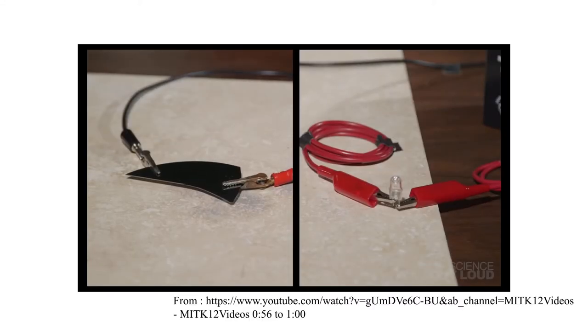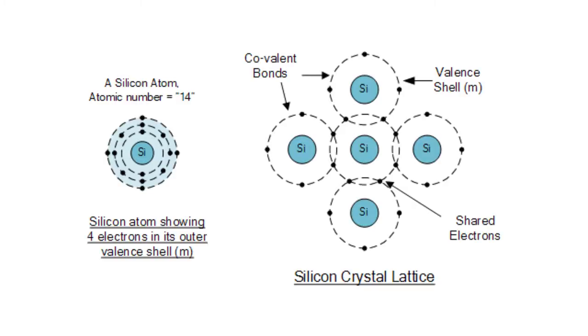A semiconductor substance like silicon will insulate at room temperature but begins to conduct electricity as it is heated. The structure of a silicon crystal is created through the binding of valence electrons, which are the electrons which reside in the outermost shell of the atom.